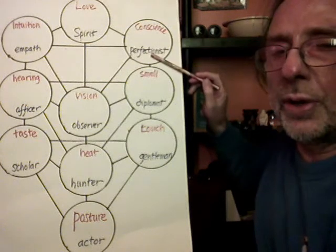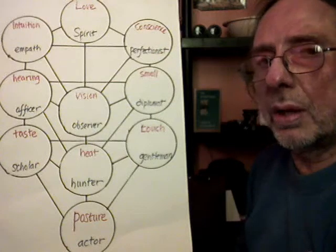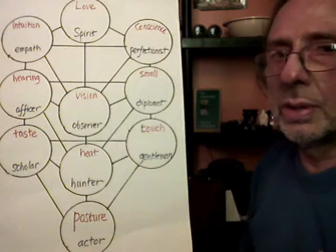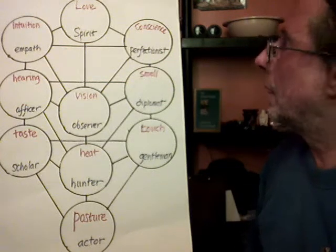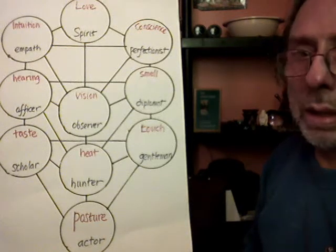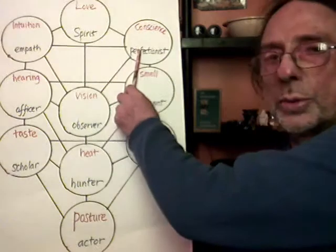The Conscience and the Perfectionist. The Conscience is the measurement of the course of action, and the Perfectionist is seeing all the consequences of that course of action.